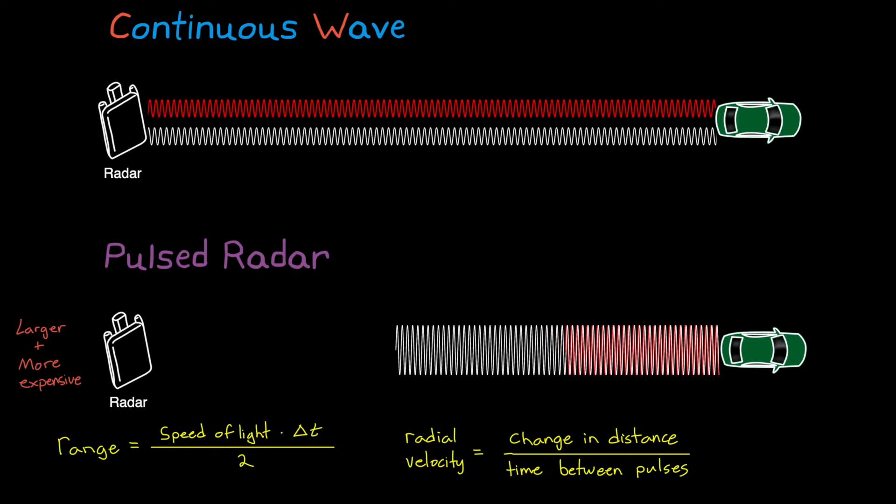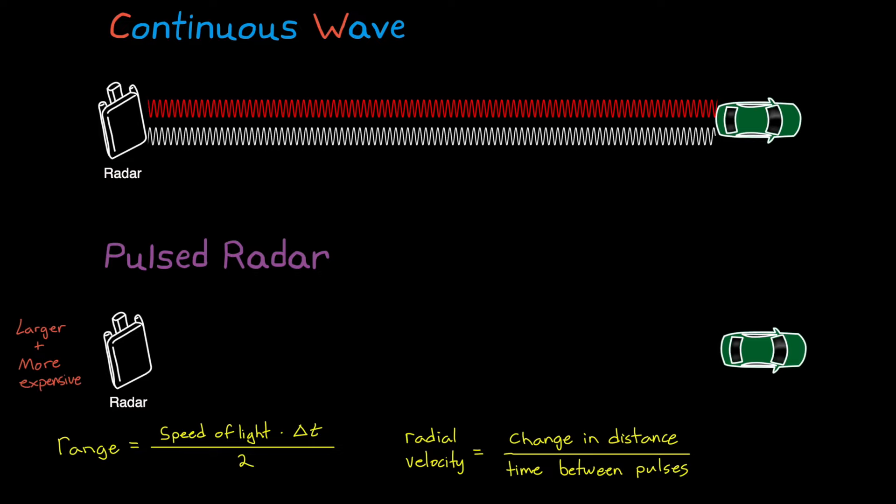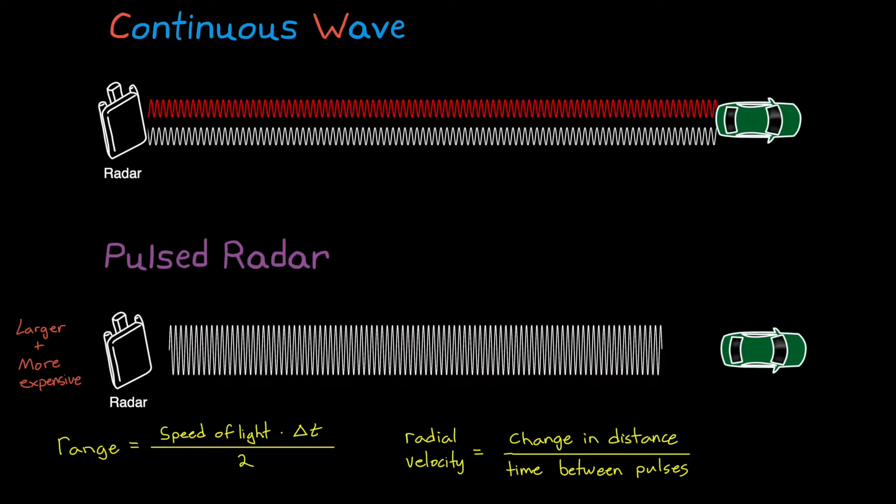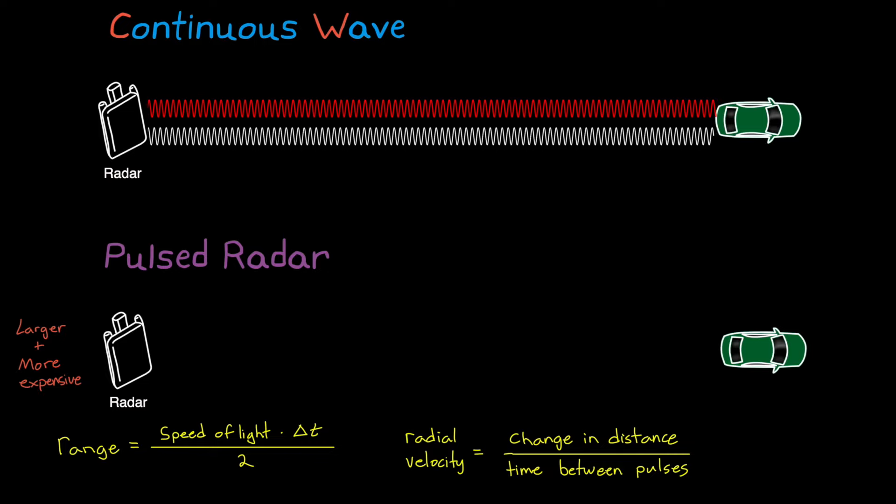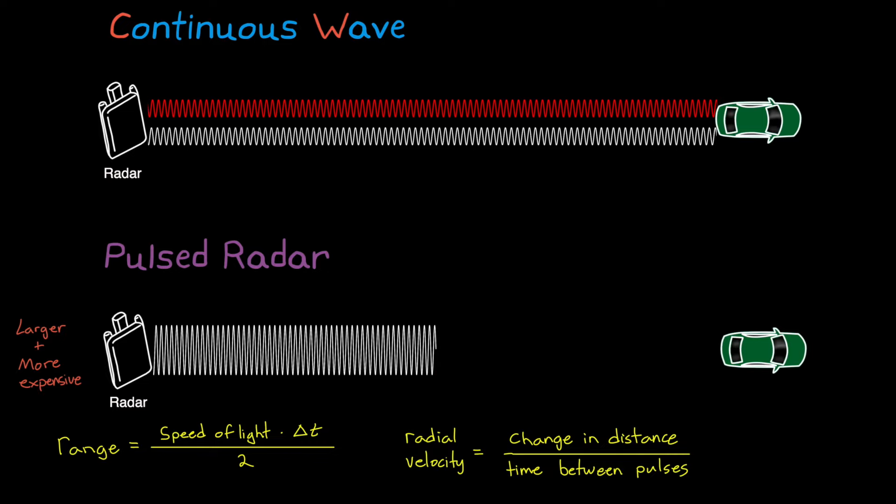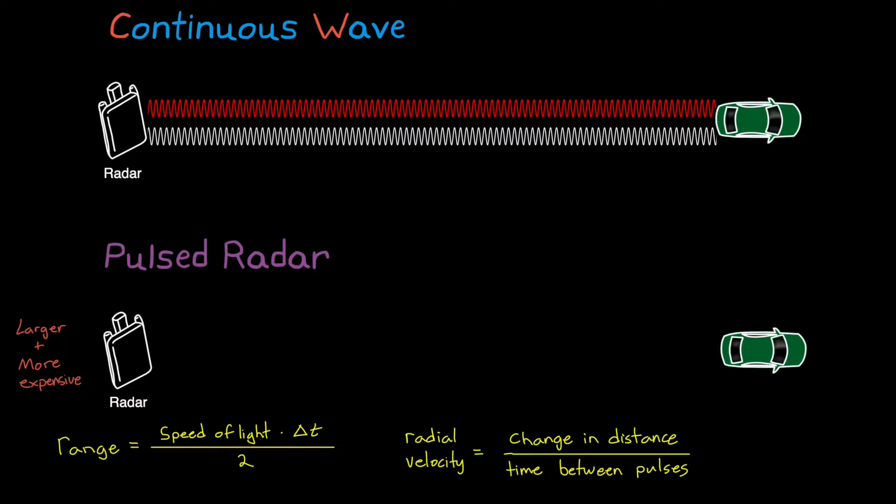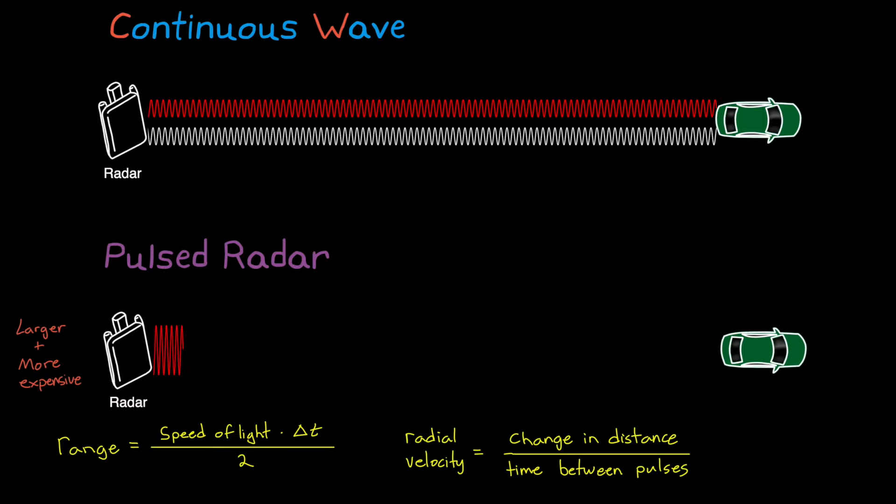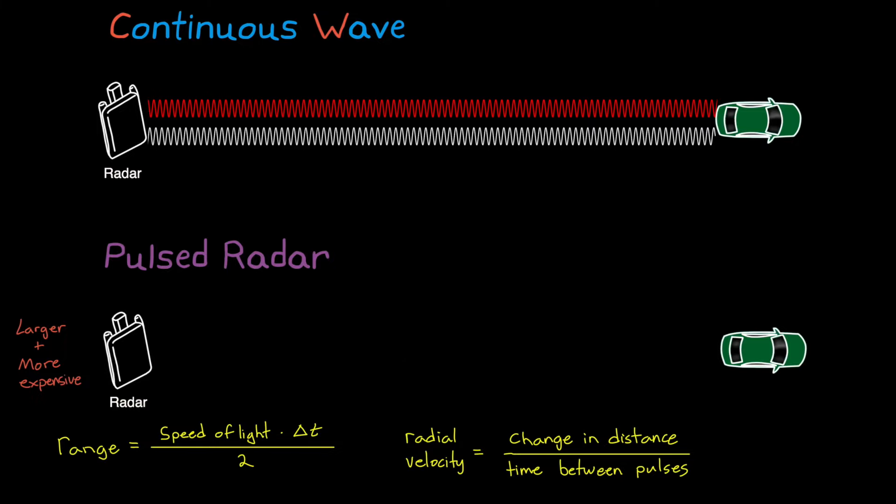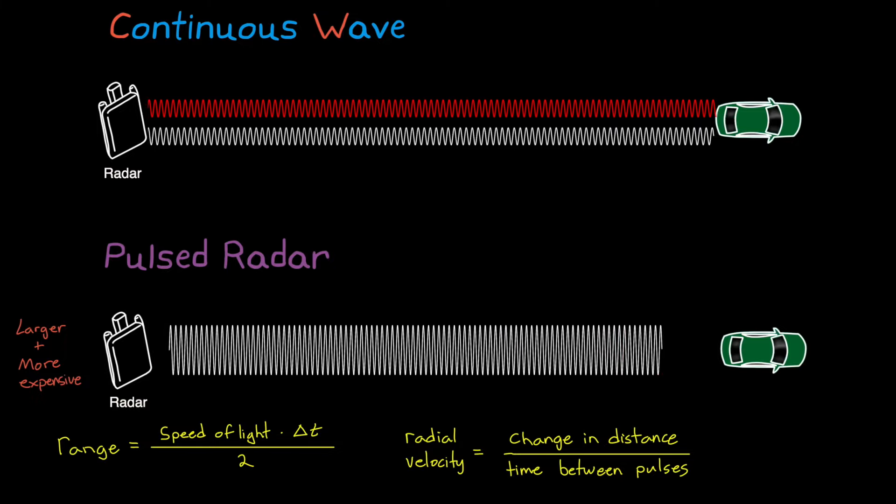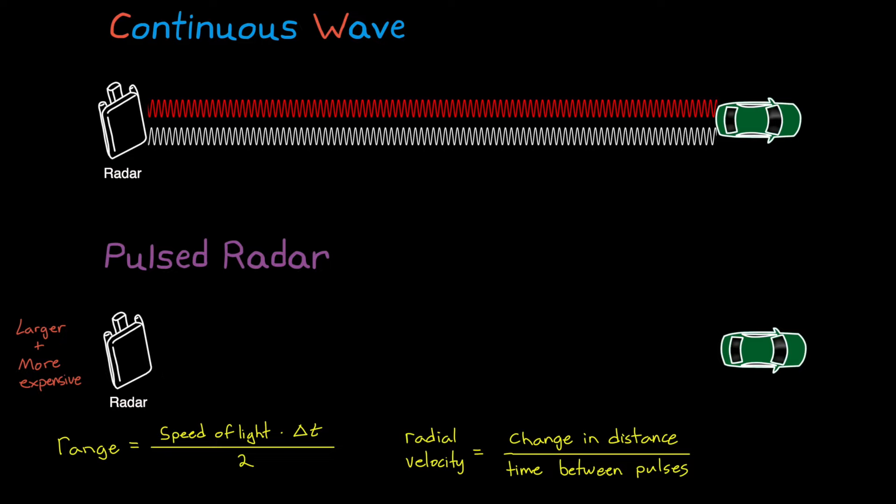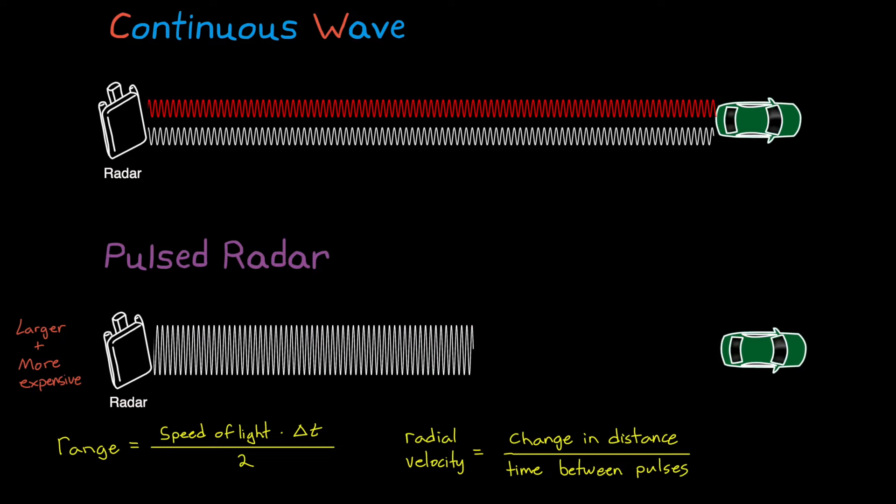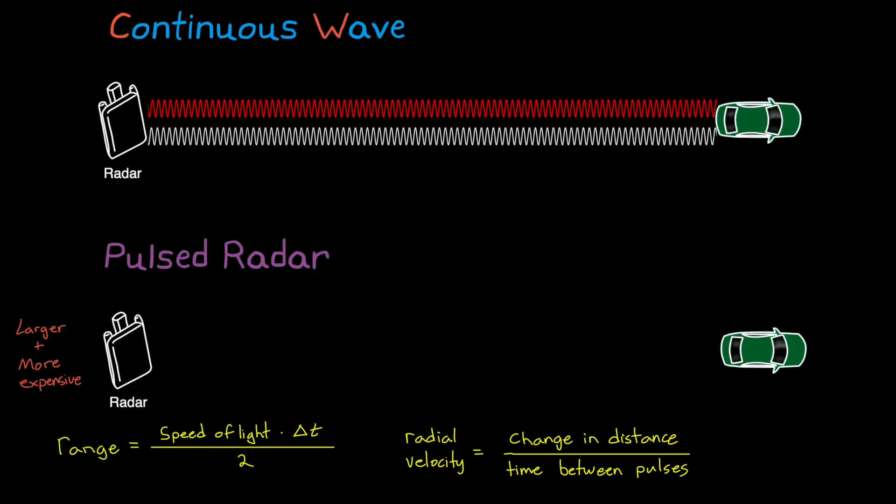It comes down to size, weight, and power of the electronics and the specific applications. For example, in pulsed radar, the pulses need to be relatively powerful so that the return signal has enough energy to be detected over the short duration, often just a microsecond or so. And handling these large peak power loads can make the electronics larger and more expensive than continuous lower power loads.